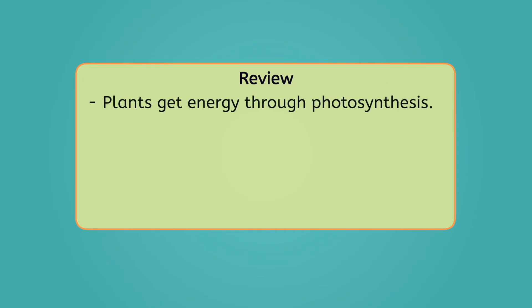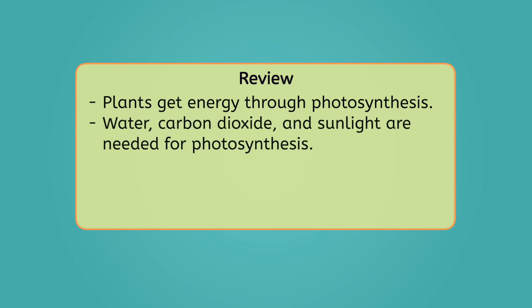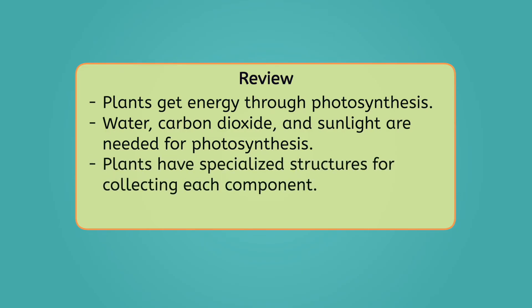Plants get energy through photosynthesis. To do this, they need three components. Water, carbon dioxide, and sunlight. Plants have specialized structures for collecting each component. The combination of these components creates glucose for the plant and releases oxygen into the atmosphere.